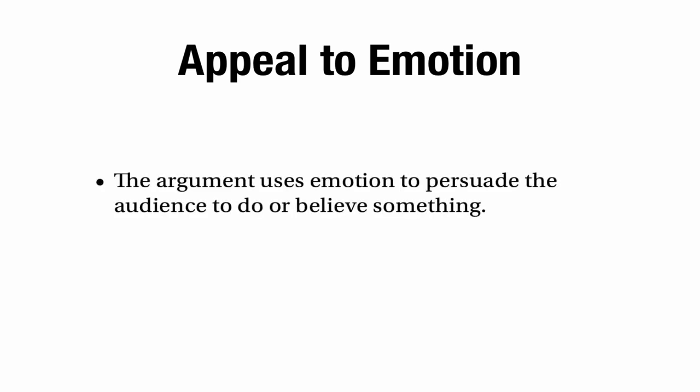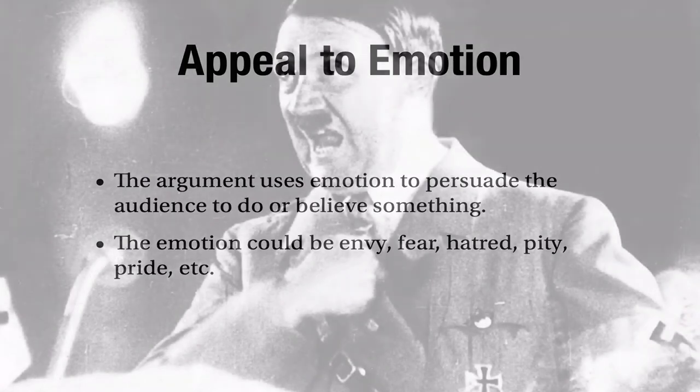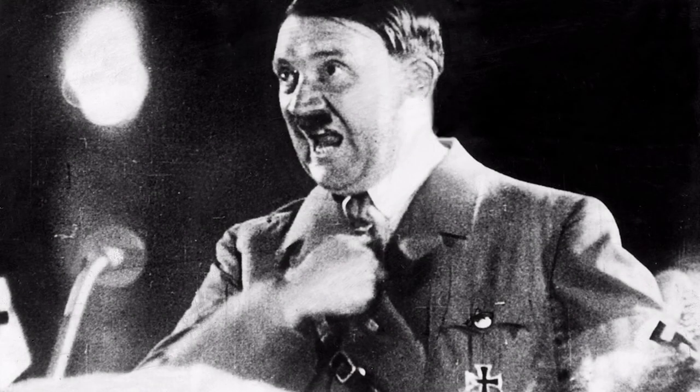The last type of appeal is the appeal to emotion. This happens when an argument uses emotion to persuade the audience to do something or believe something. It could be all sorts of emotions — envy, fear, hatred, pity, pride, and so on. This appeal is often made by politicians in their arguments — they often appeal to fear of something that's going to happen, pride in their nation, hatred of some kind of enemy. If you listen to political speeches, especially where politicians get worked up into a frenzy, you'll see they're appealing to all sorts of emotions.